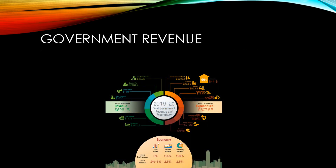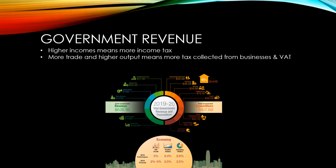If specialization causes incomes to rise, that means more income tax for the government. Additionally, with more trade and higher output, more tax will be collected from businesses' profits and from VAT. This additional revenue can be invested into improving public services such as health and education, improving outcomes for everyone.